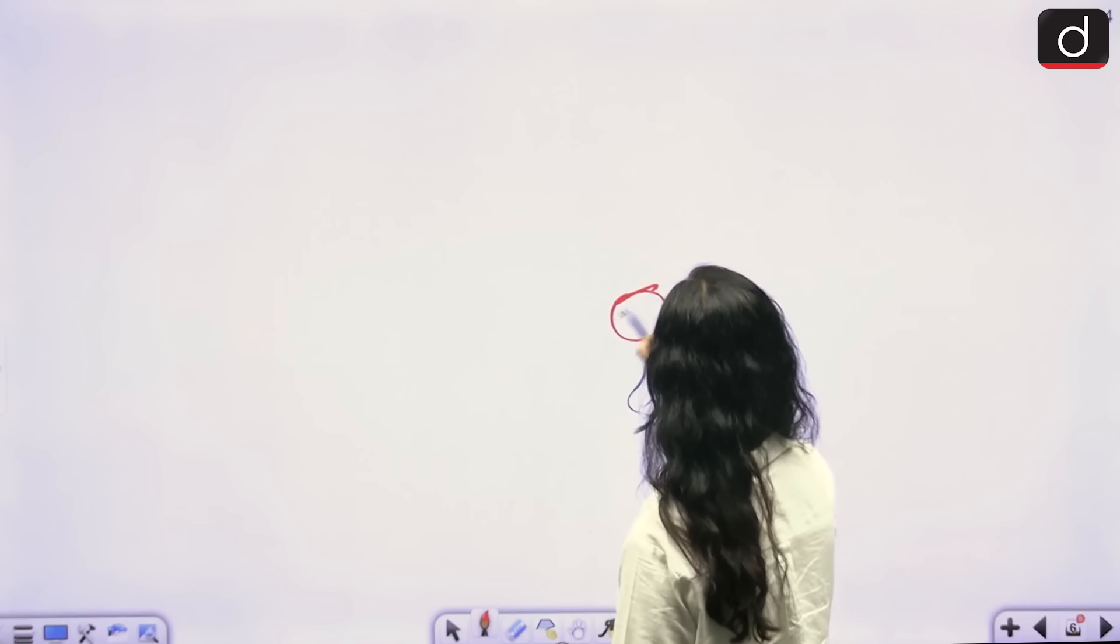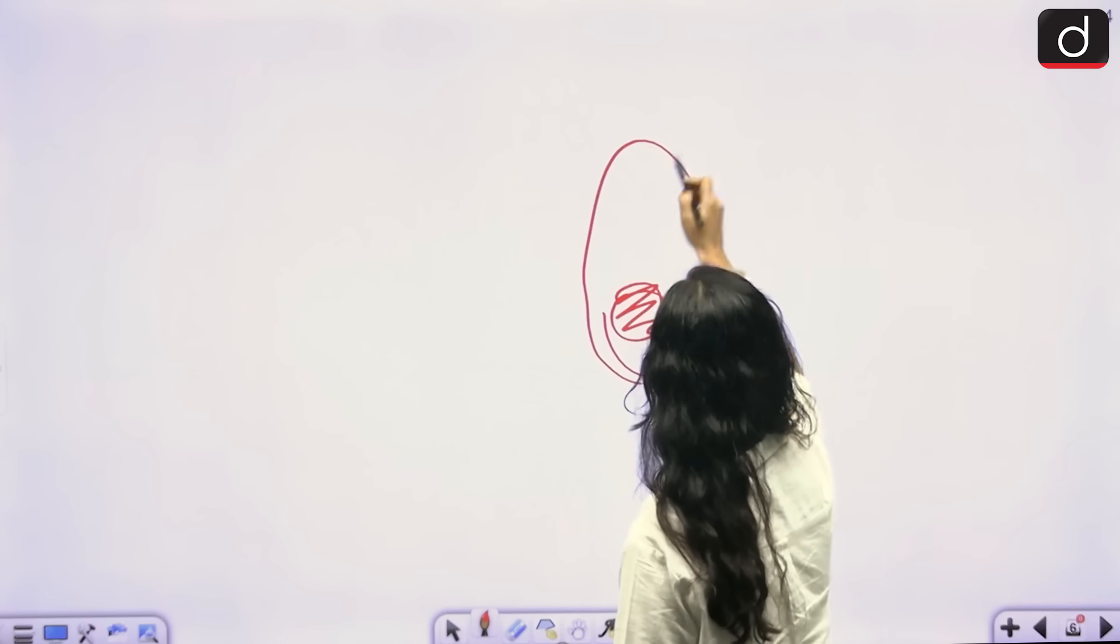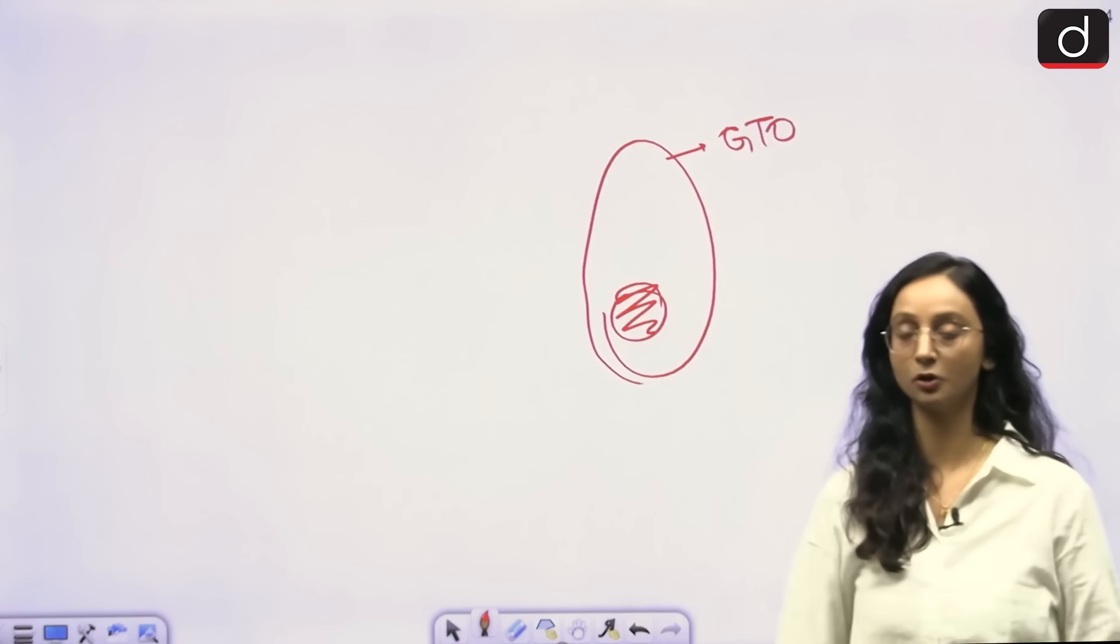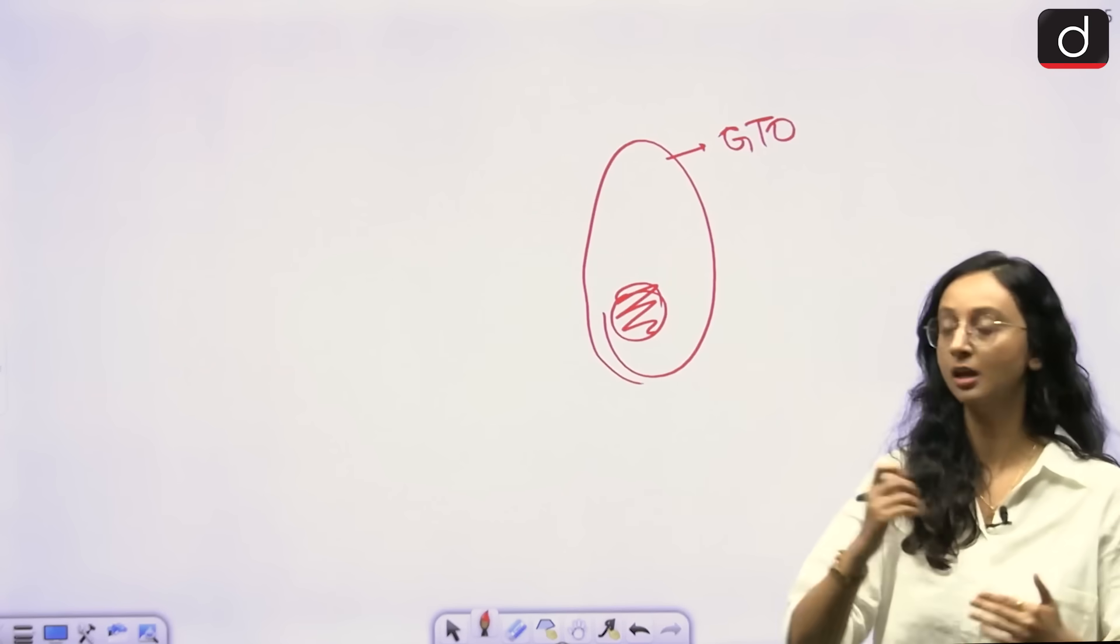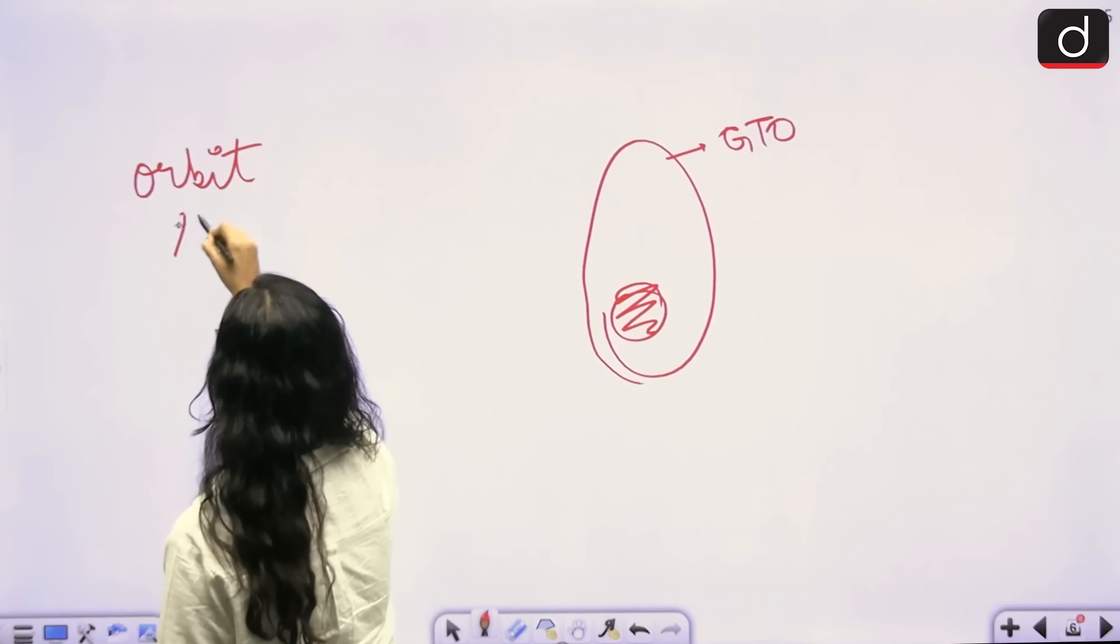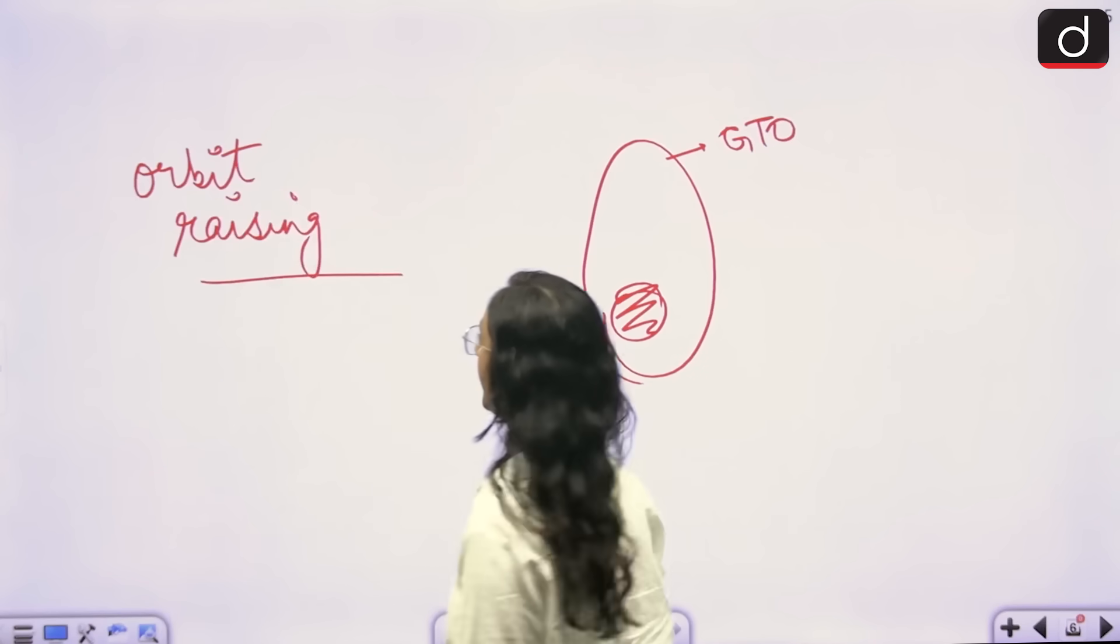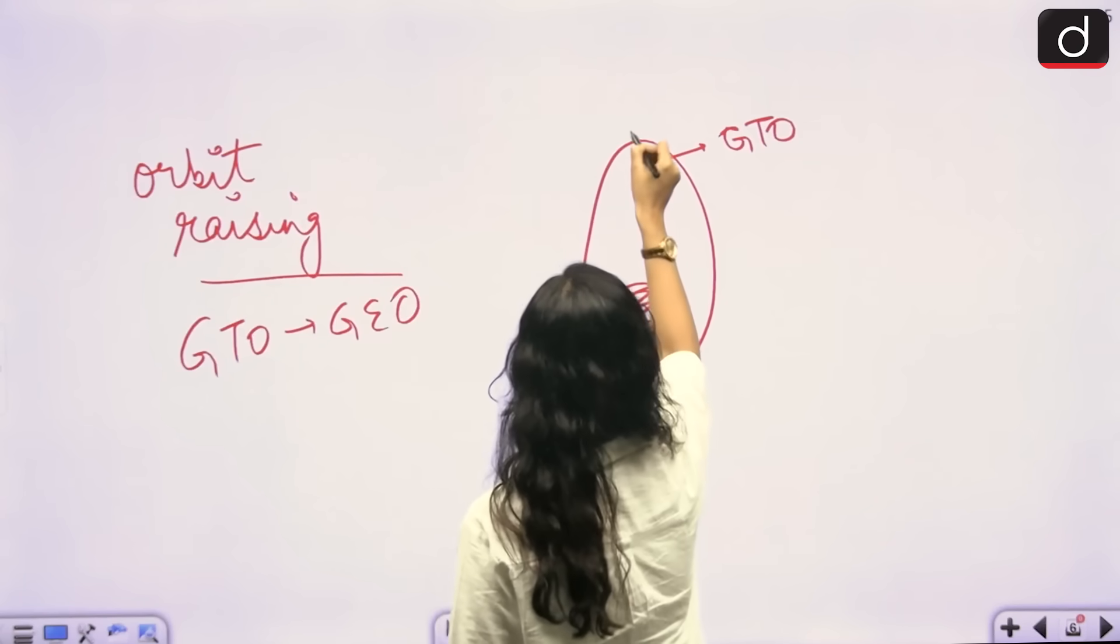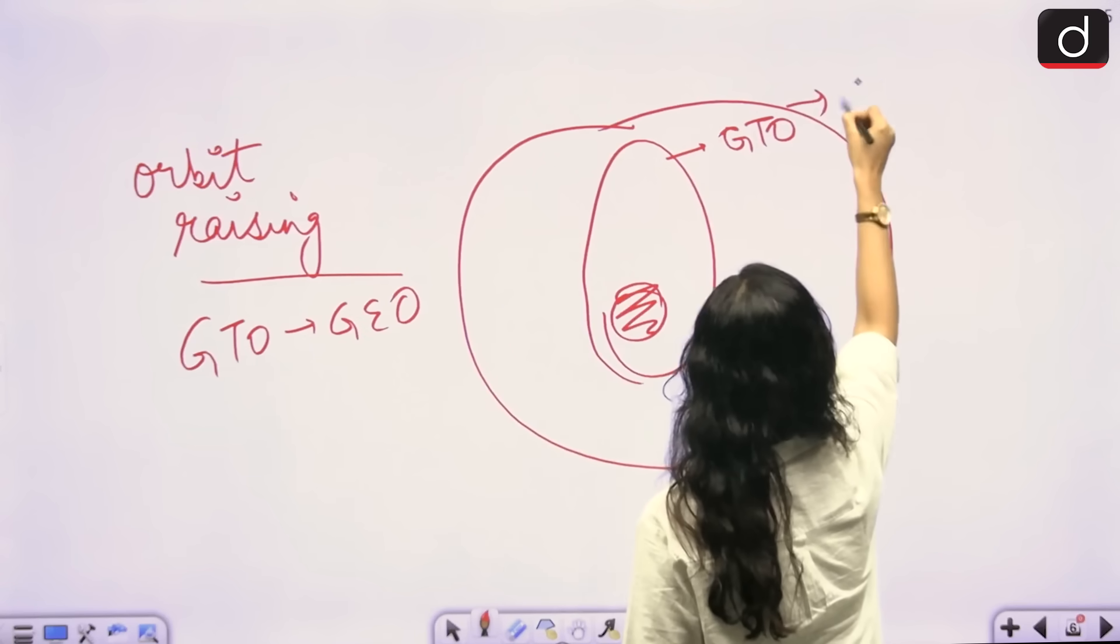So let's say this is the Earth, and here you will have this elliptical orbit, which will be GTO. Now any satellite does not automatically move to GEO. It first has to reach GTO, and then a phenomenon which is known as orbit raising happens, where a satellite moves from GTO to GEO. This circular orbit here is GEO.